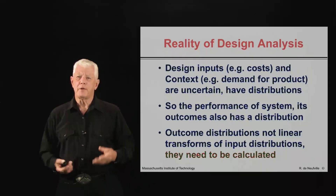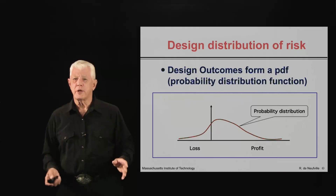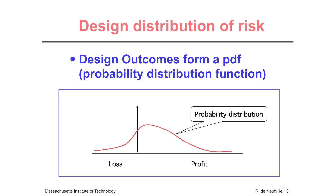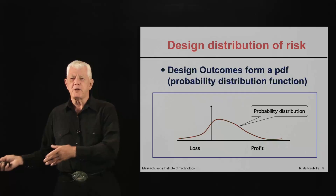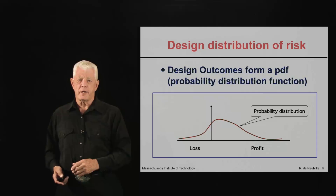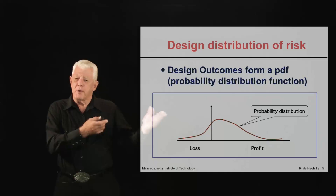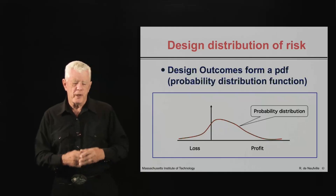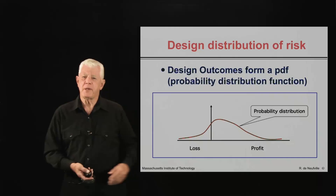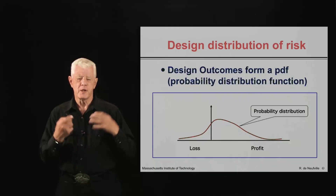Let me give you a generic view of the kinds of distributions that can occur. In general, we have a distribution for the design outcomes, represented here as a probability distribution function. We have the possibility that things don't go so well — that there are losses and poor performance — on the left-hand side of the graph. There's some medium range, and it doesn't have to be unimodal. Then we have possible upsides if everything goes really well and people really like the product.